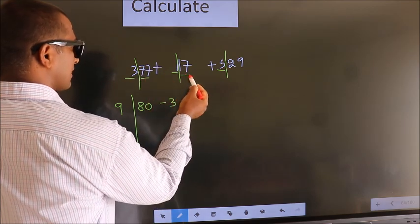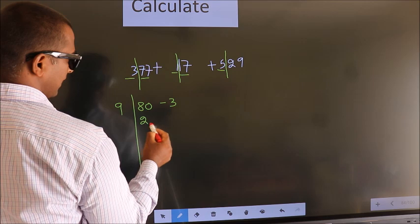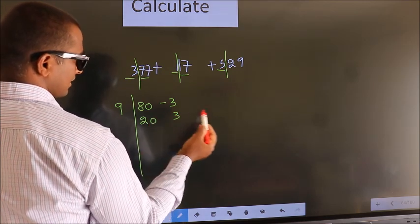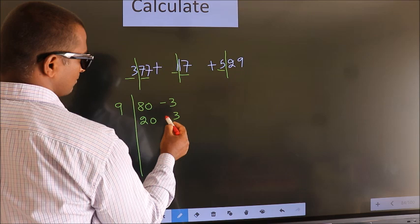Next number, 17. 17 is close to 20 and less by 3. Since less, we should put negative symbol.